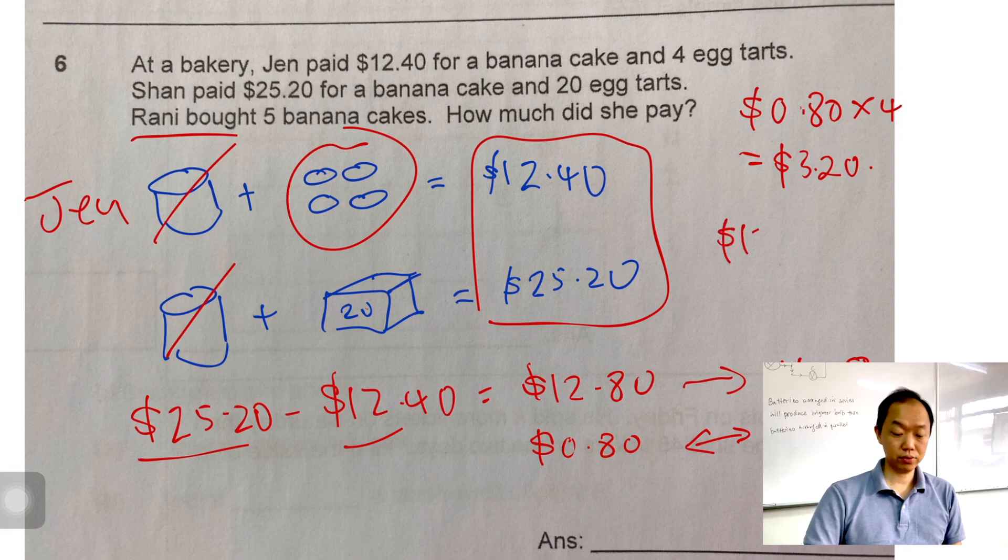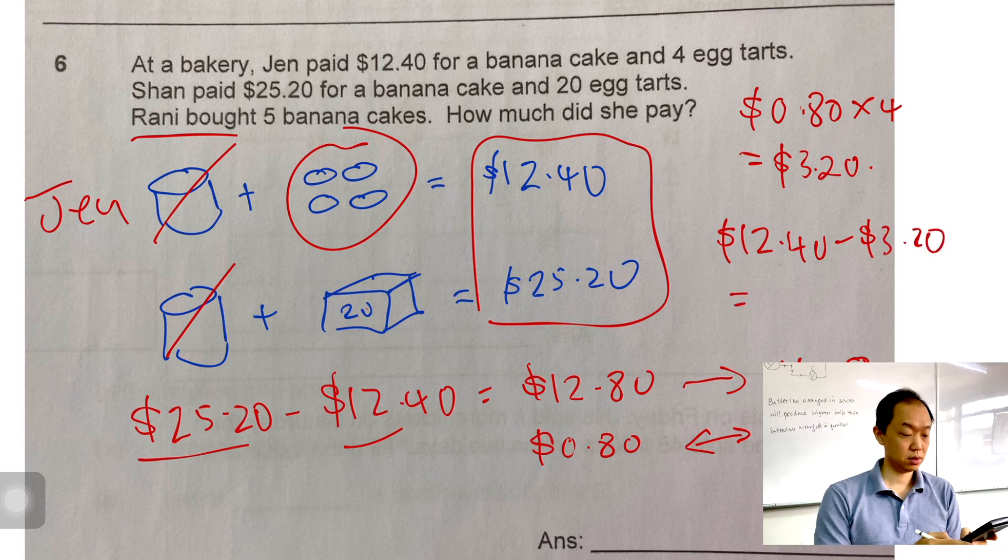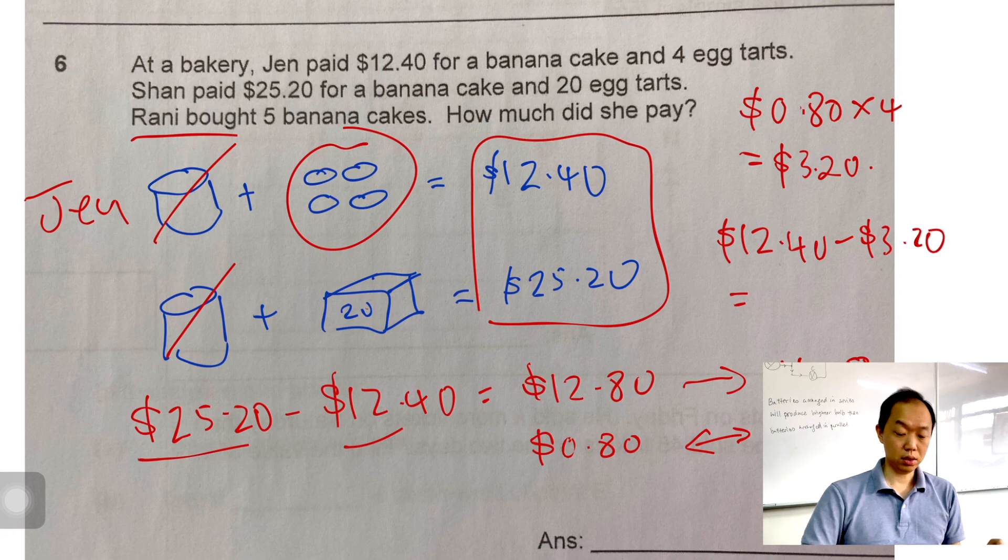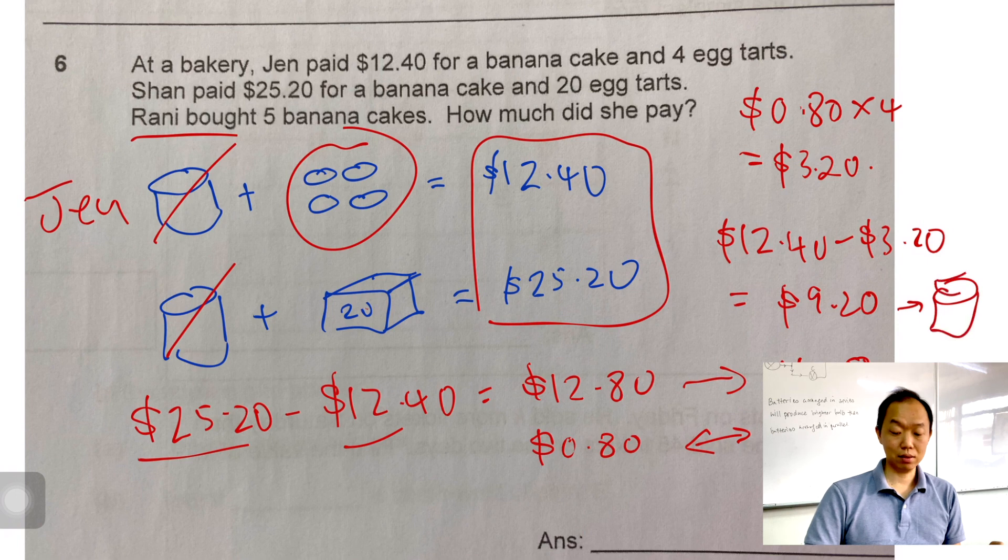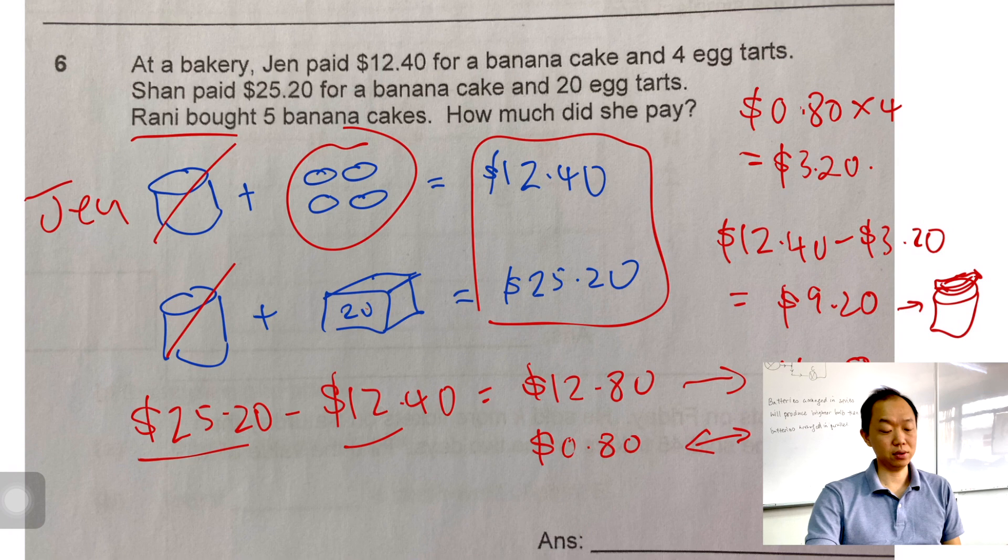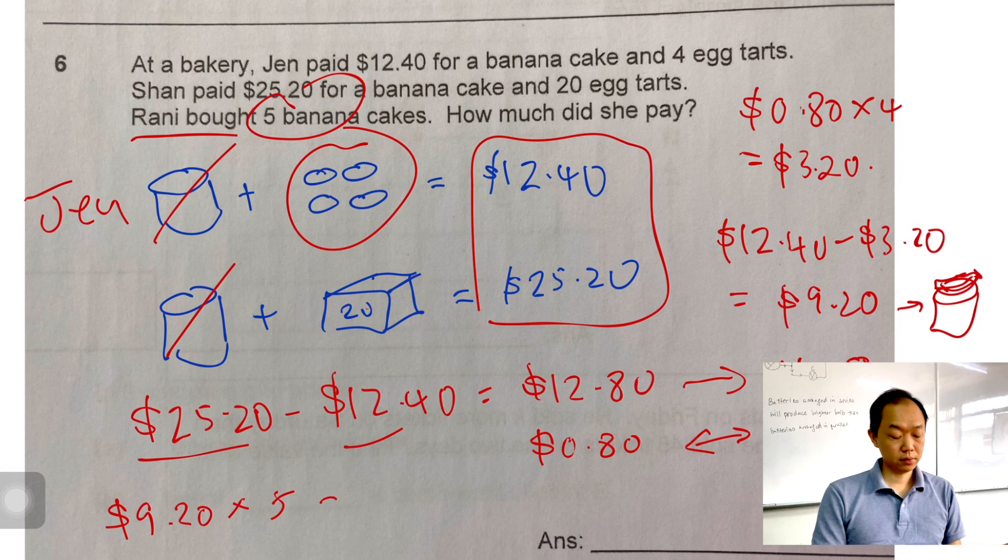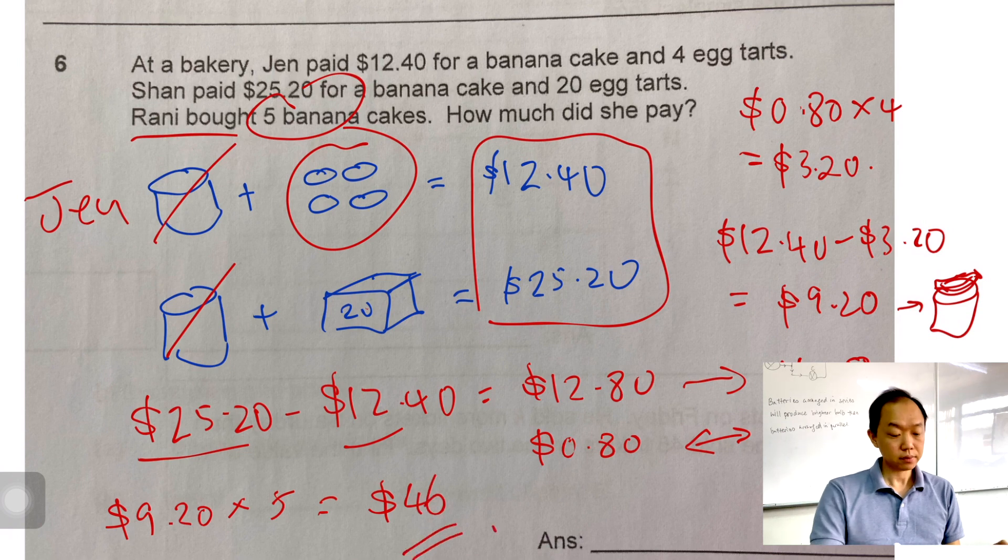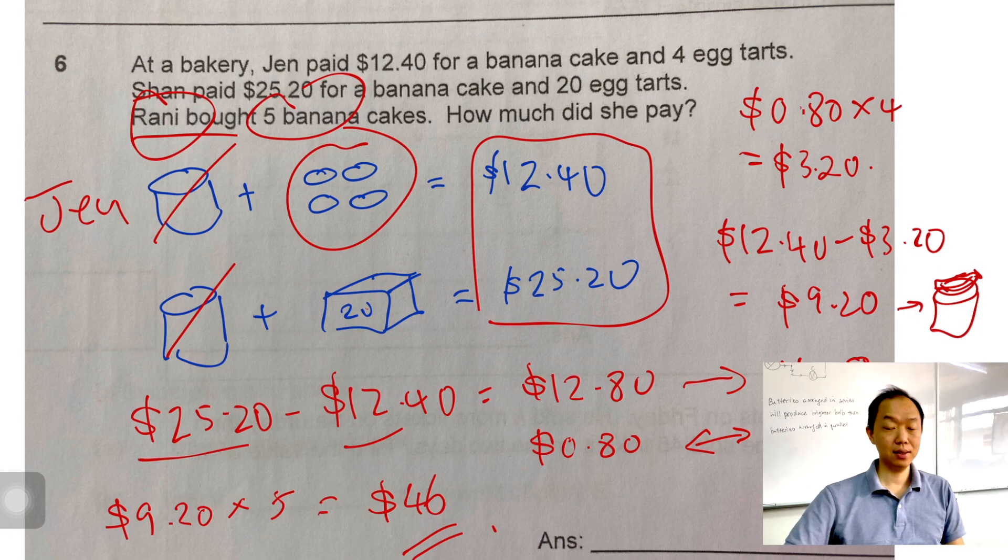That's $1.80. So 1 banana cake is $9.20. This is 1 banana cake. Now if 1 banana cake is $9.20, if you want to find the cost of 5 of them, all we have to do is take $9.20 times 5, that will be $46. So Rani paid a total of $46 for the banana cake. Alright, last one.